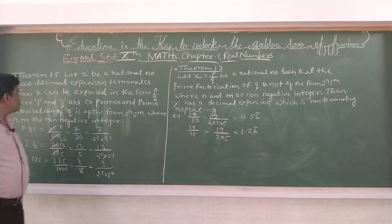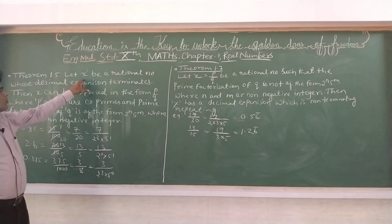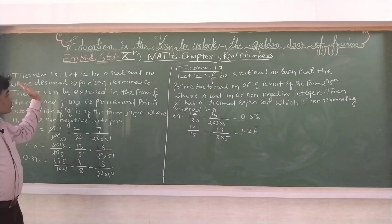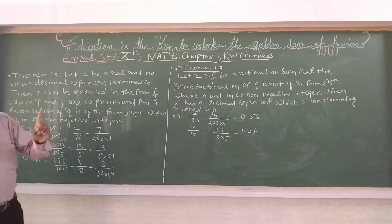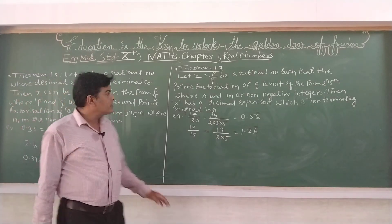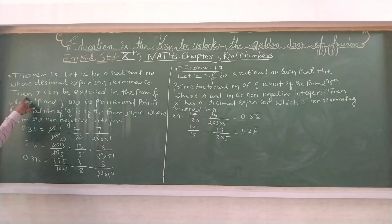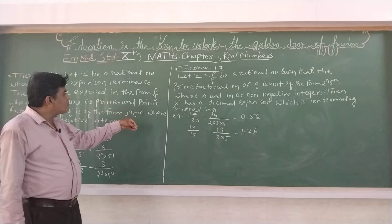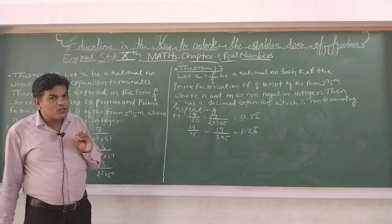Let x be a rational number whose decimal expansion terminates. Agar di hum x ko ek rational number leenge — yaani p upon q form mein. To uski jo decimal expansion hogi, wo terminate hogi. Aise hum ek rational number x leenge. Then x can be expressed in the form of p upon q, because we assumed x to be a rational number, aur rational number hoti hai to p upon q form mein hoti hai.